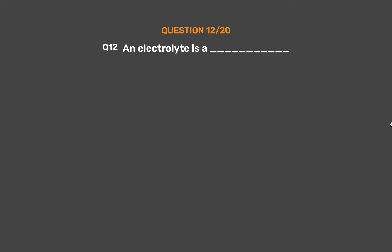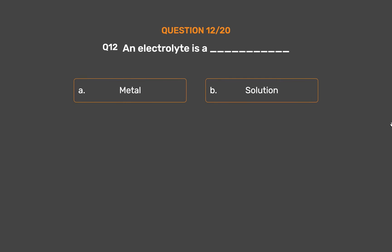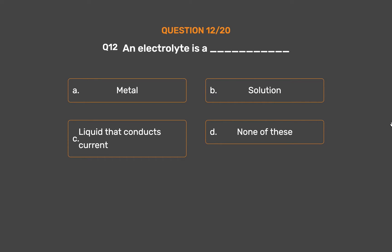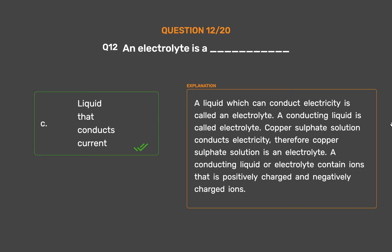Question No. 12: An electrolyte is a underscore. Option A: Metal. Option B: Solution. Option C: Liquid that conducts current. Option D: None of these. The correct answer is Option C: Liquid that conducts current. A liquid which can conduct electricity is called an electrolyte.